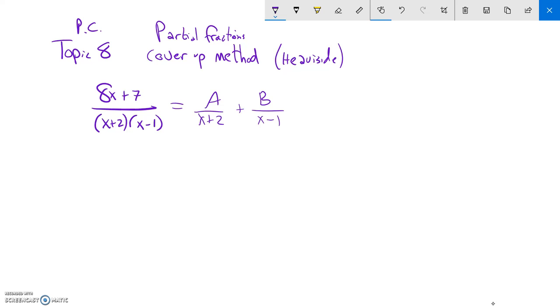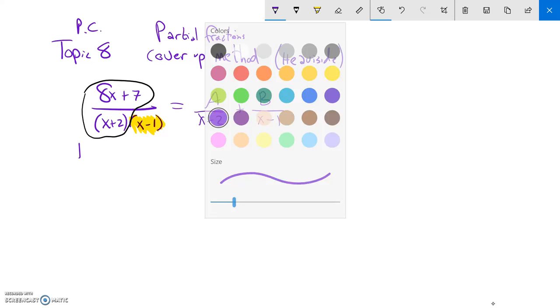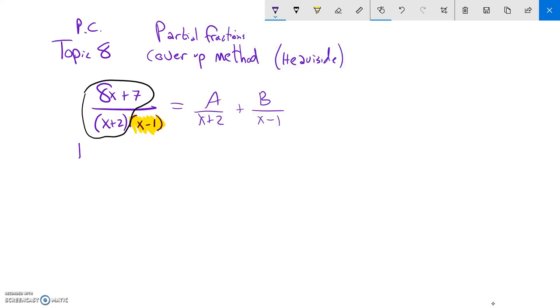So here is his method. What we're going to do is take one of the zeros from here. For example, let's take one because one makes this a zero. And we're going to cover up that part of the fraction. Then what we'll do is take the rest of the fraction and plug in that zero. Plug that one into it. So notice this would be 8 times 1 plus 7 over 1 plus 2.